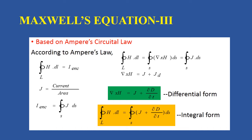Maxwell's Equation 3 is based on Ampere's Circuital Law. According to Ampere's Circuital Law, the line integral of H dot dL is equal to total current enclosed. The current density is given by current divided by area, so total current enclosed equals the surface integral of J dot dS, where J is the current density. With this, we can write del cross H equals J plus J_d, where J_d is dou D by dou t, the displacement current density. So del cross H equals J plus dou D by dou t is the differential form of Maxwell's Equation 3. The integral form is the line integral of H dot dL equals the surface integral of (J + dou D by dou t) dot dS.